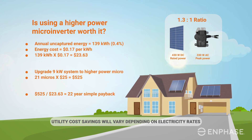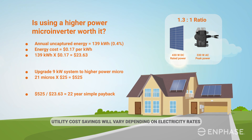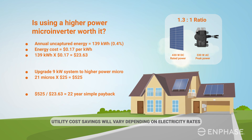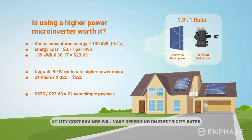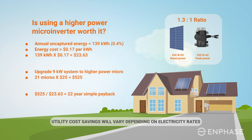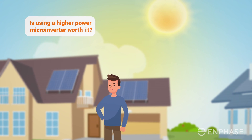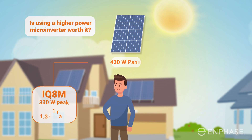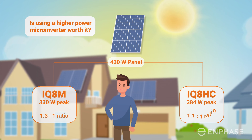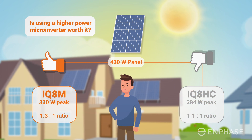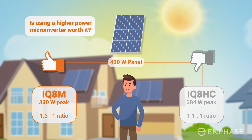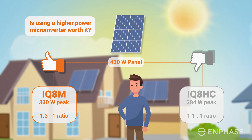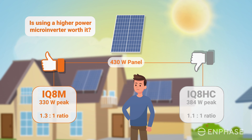It's worth noting that over time the amount of uncaptured energy will decrease as the solar panels gradually degrade with age and put out less power, so the payback period will actually be longer than this simple payback calculation suggests. In this scenario, we've determined that the higher cost of using a higher power microinverter is not justified — the higher ratio of 1.3 to 1 is the better value. Most PV systems won't have such ideal conditions; if your system has a less optimal orientation, or is in a location with less intense sunshine, you could choose to go with an even higher ratio.